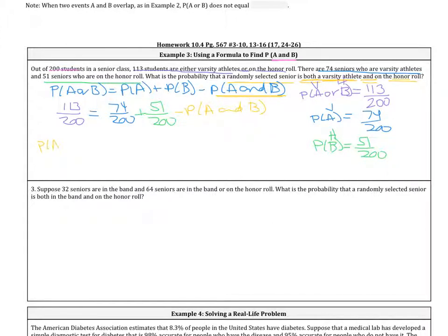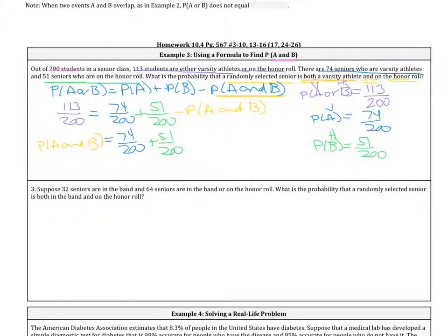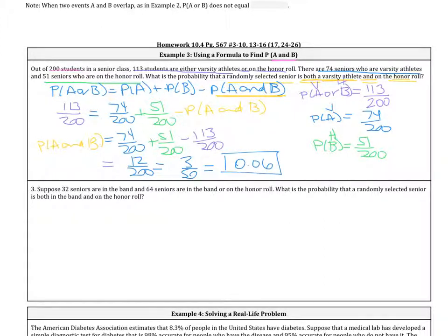The probability of A and B equals 74 out of 200 plus 51 out of 200 minus 113 out of 200. To simplify: 74 plus 51 is 125, minus 113 gives us 12 out of 200, or 3 out of 50. That changes to 0.06, or 6%.